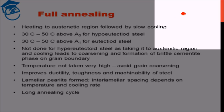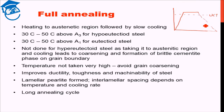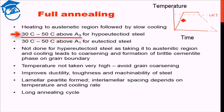Just to remind you, in full annealing the heat cycle is: we heat the body above the upper critical temperature, hold it at that temperature for a certain amount of time, and then cool it very slowly. This is basically the cycle for a full annealing process. Now exactly speaking, the temperature to which the specimen is heated is 30 to 50 degrees Celsius above the A3 temperature for hypo-eutectoid steel.